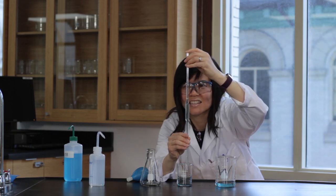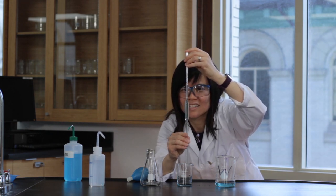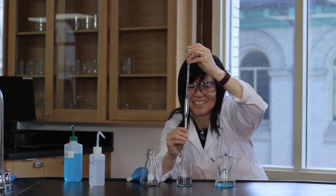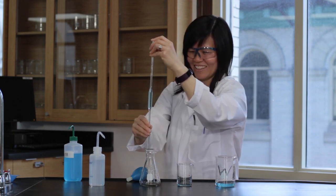Release the finger pressure slowly to allow the solution to drain until the bottom of the meniscus is at eye level. Touch the tip of the pipette to the flask to remove any partially formed drops.